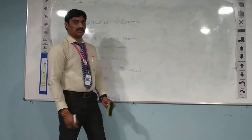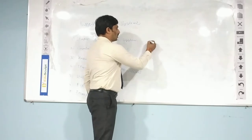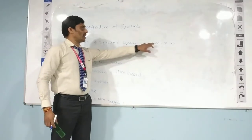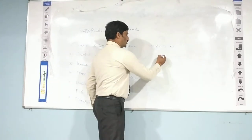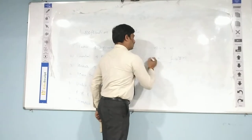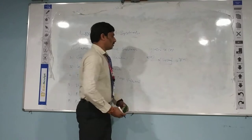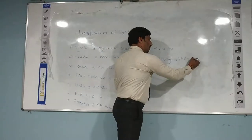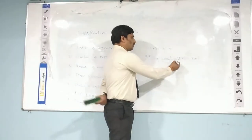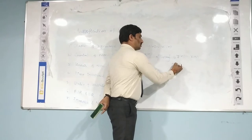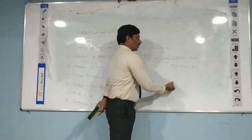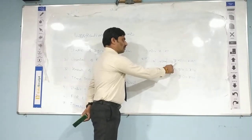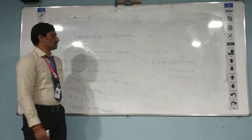The present output of the system depends on present inputs only. So y(n) = x(n). Here y(n) is the present output and x(n) is the input. For example, if n=0, y(0) = x(0); if n=1, y(1) = x(1). The output always depends on present inputs only, so the system is a static system.